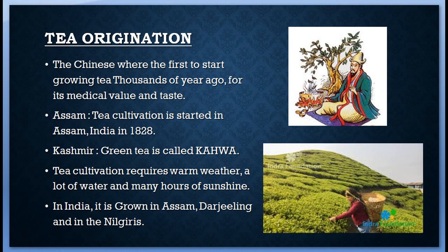Tea plants are continuously pruned to keep them at a height of 2-3 meters so that it is easy to pluck the leaves. Tea requires a lot of water and is grown on hilly areas so that extra water can drain away, as excess water damages the plants. It requires warm weather and many hours of sunshine. In India, tea is grown in Assam, Darjeeling, and in the Nilgiris.